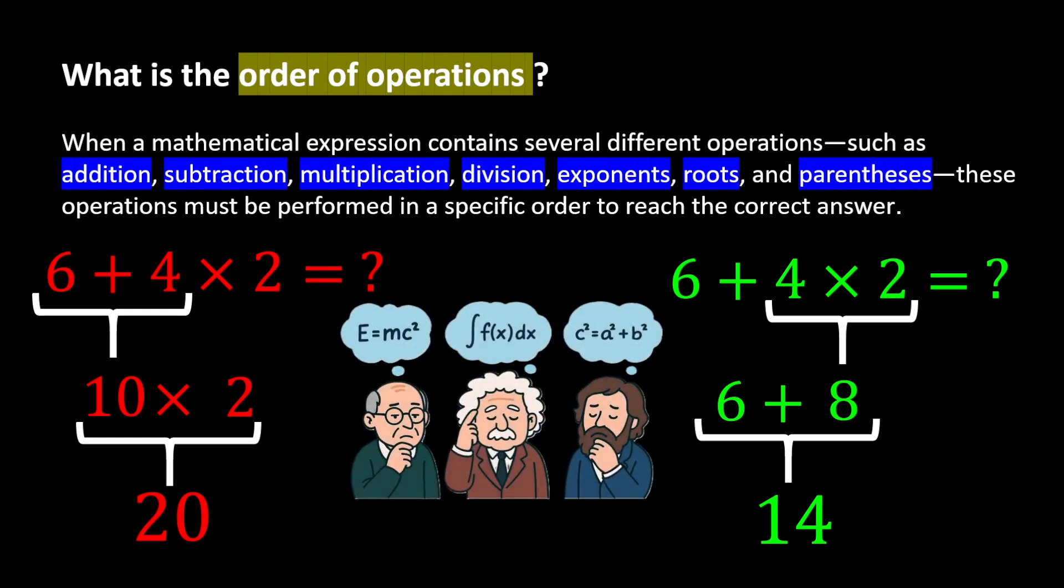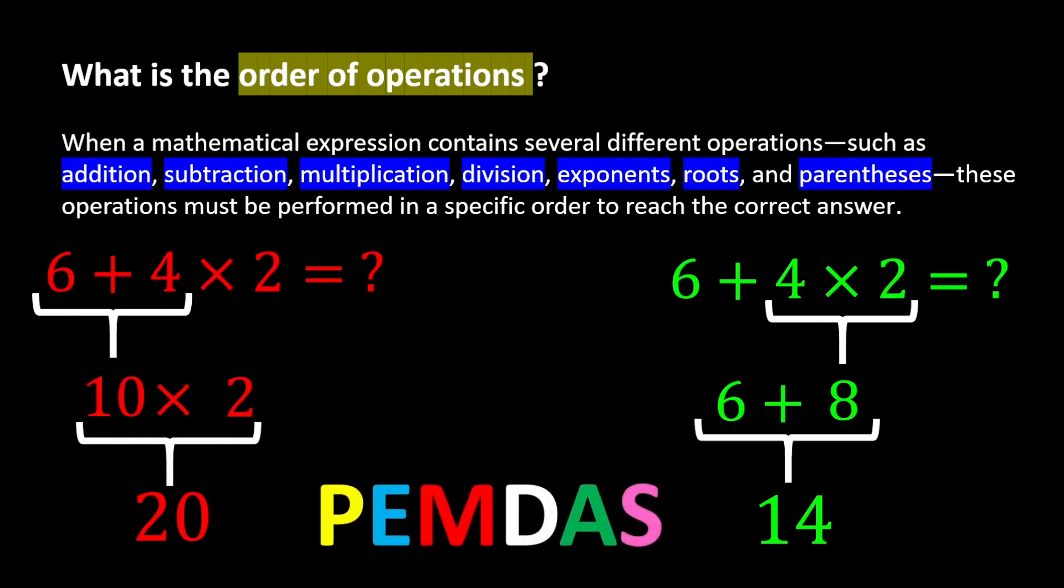To prevent disorder in mathematics, mathematicians agreed on a universal rule. This rule is called the correct order of operations, and it is known by a short abbreviation called PEMDAS, where each letter in the word PEMDAS stands for a specific step.